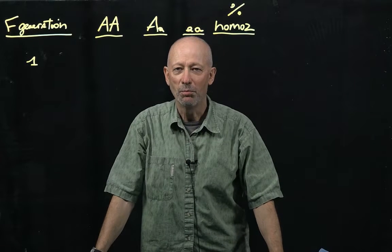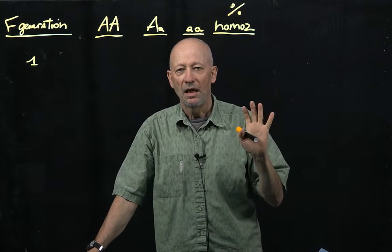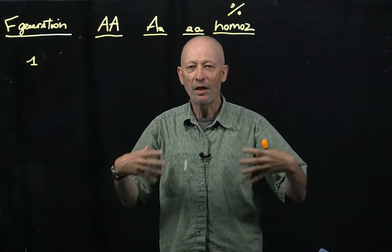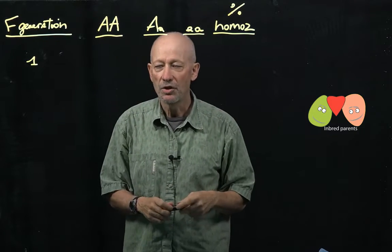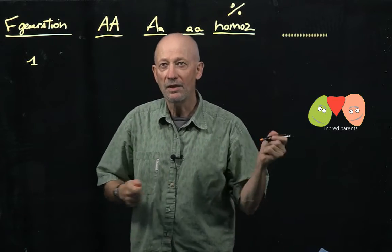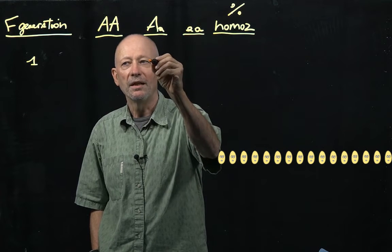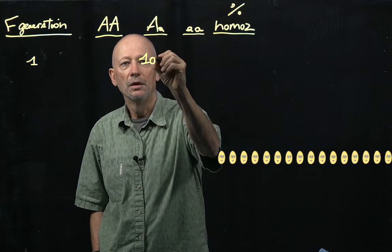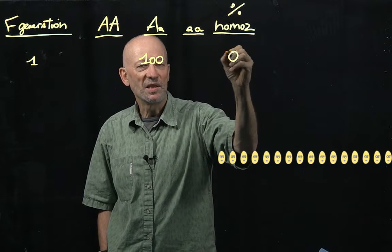What is the mechanics of inbreeding? We're going to go through an example where we're taking 100 F1 plants, and we're going to carry it through selfing one generation after the other. So we start with the F1 generation, and you know that at that time, our 100 plants will be all big A little a, so we're going to have 100 big A little a, and the percent of homozygosity is going to be zero.